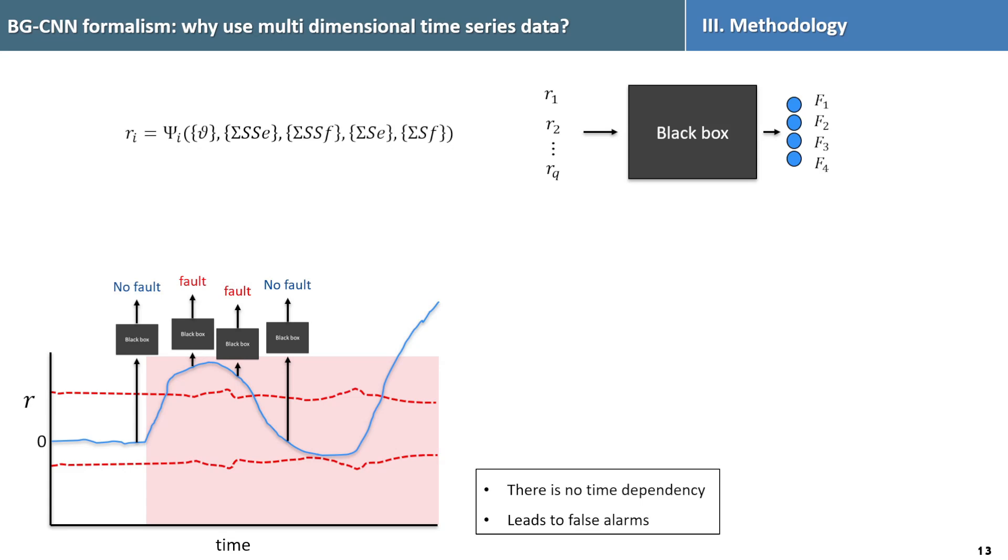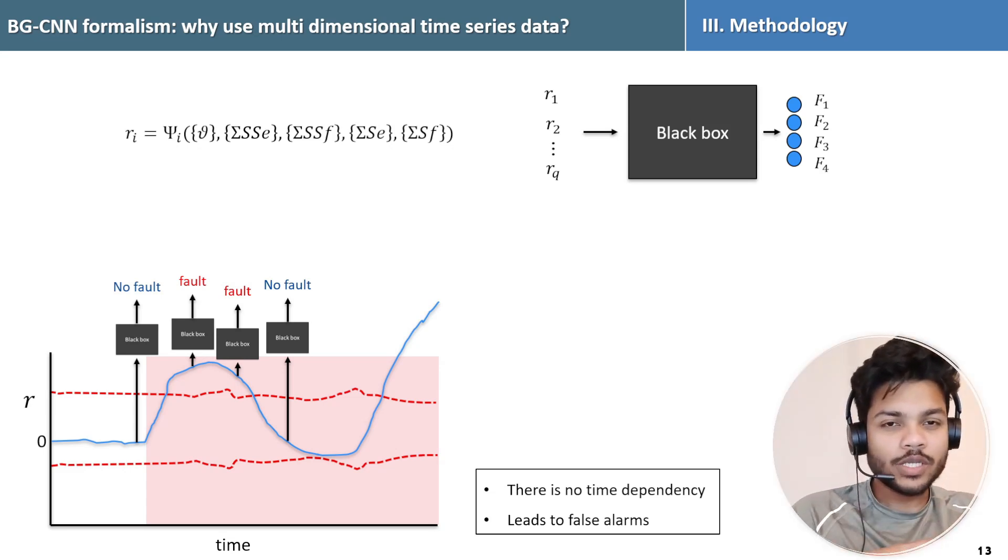Using a neural network model with a single residual signal at each instant can lead to false alarm. Despite knowing there is a fault, the neural network might output no fault due to the dynamic behavior and lack of temporal dependency. For this particular section, if you are feeling little bit difficulty to understand, please leave a comment in this video so that I can explain it more.